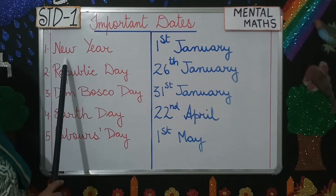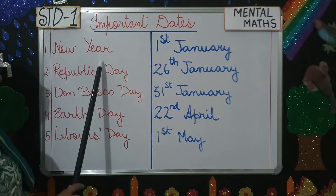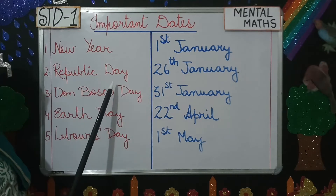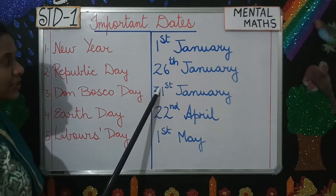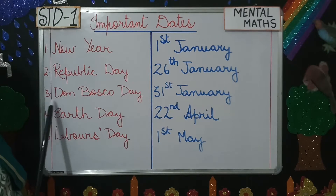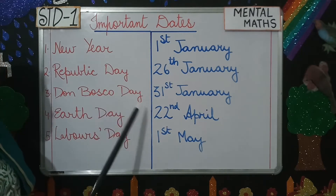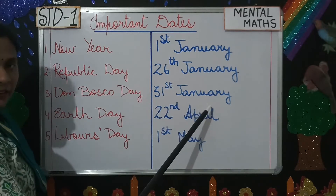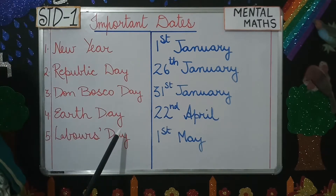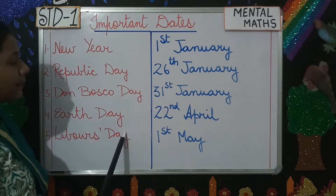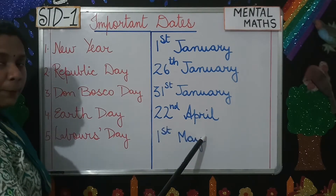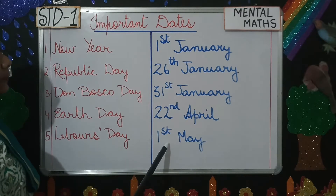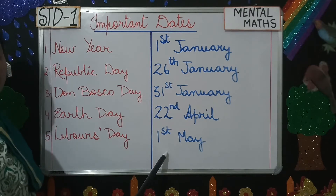Number one: New Year is celebrated on 1st January. Republic Day is celebrated on 26th January. Number three: Don Bosco Day is celebrated on 31st January. Number four: Earth Day is celebrated on 22nd April. Number five: Labour's Day is celebrated on 1st May.